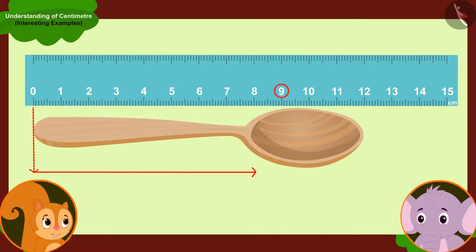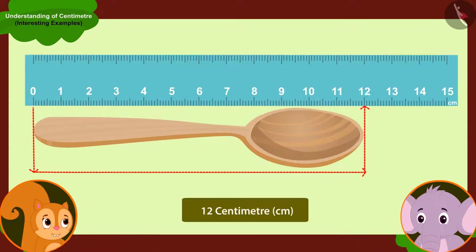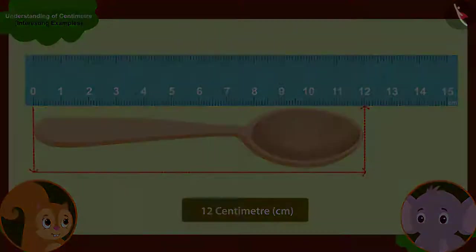you place it next to the ruler and start measuring from zero. The number which is reaching the other end of your object — the length of your object will be that number in centimetres.